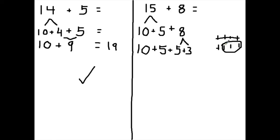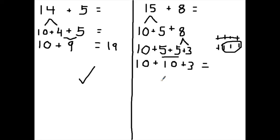Now what we have is a 10, and since we did 5 and 5, we have another 10, and a 3. So how many 10s do we have? We have 2 tens. What is 2 tens? 2 tens is 20. 2 tens equals 20. 20 plus 3 more is the same thing as saying 2 tens and 3 more — 2 tens and 3 more is 23.